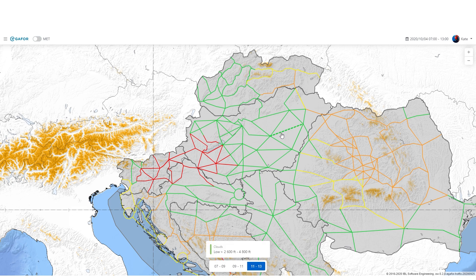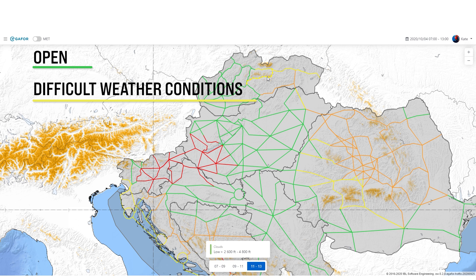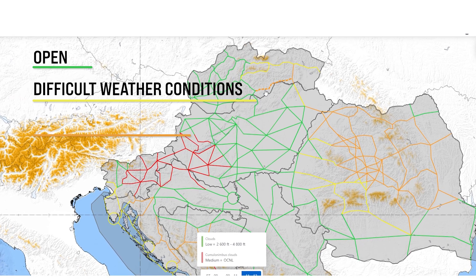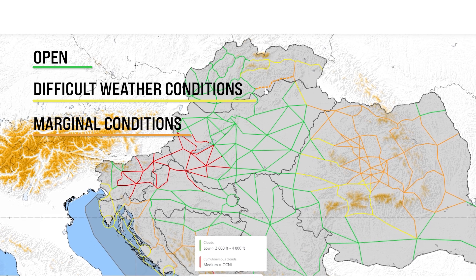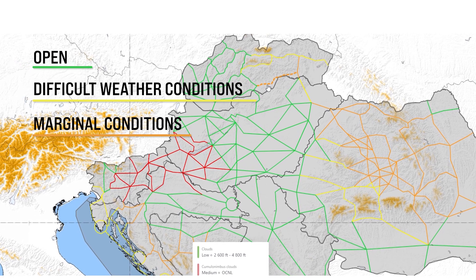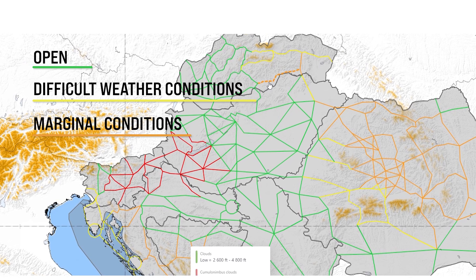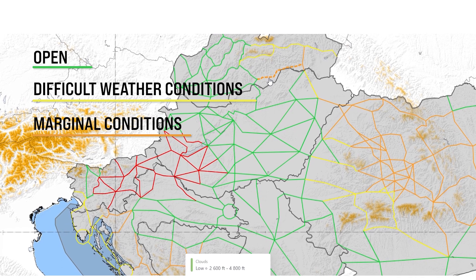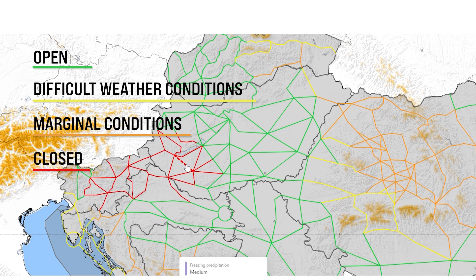eGafor translates meteorological forecasts into traffic light colors. Green means open. Yellow indicates difficult weather conditions for VFR operations — a high level of skills and knowledge of local conditions is required. Orange means marginal conditions not suitable for standard VFR operations, with a high level of risk for aircrew under VFR conditions and a high level of skills and knowledge of local conditions and terrain required. Red means closed.